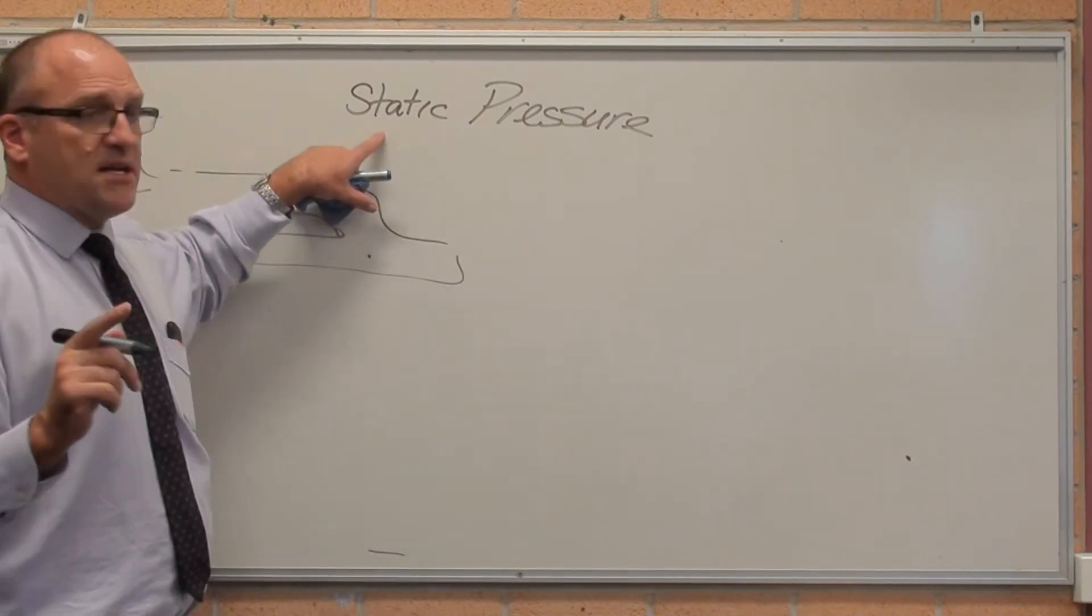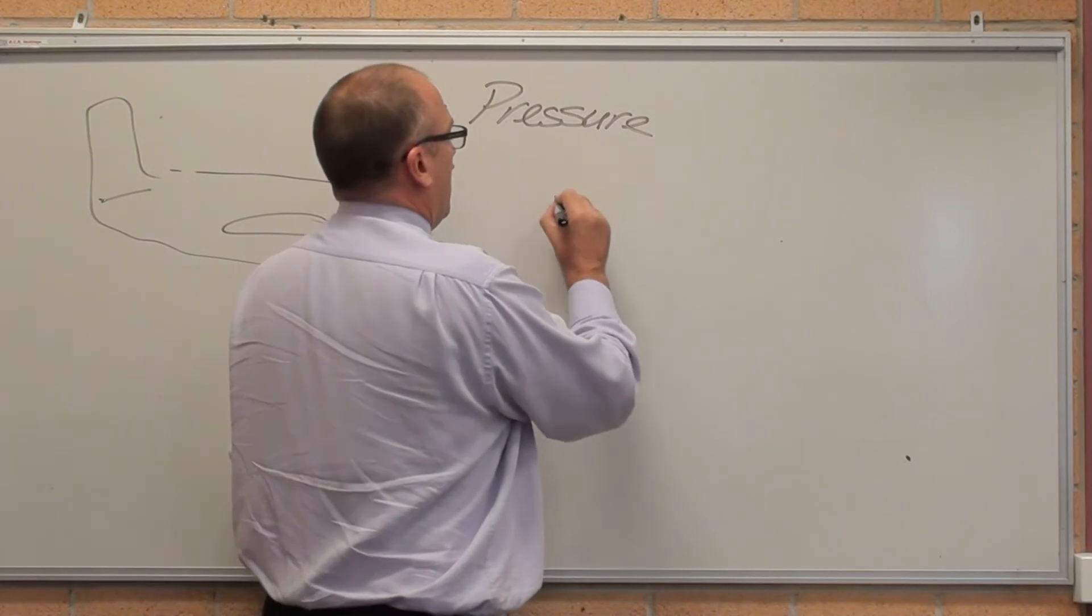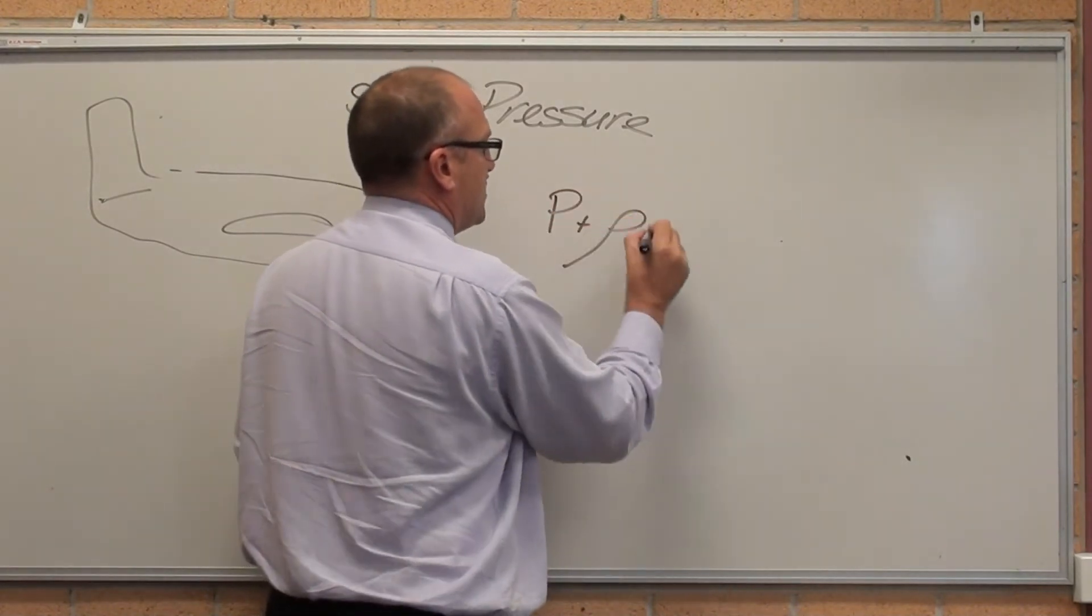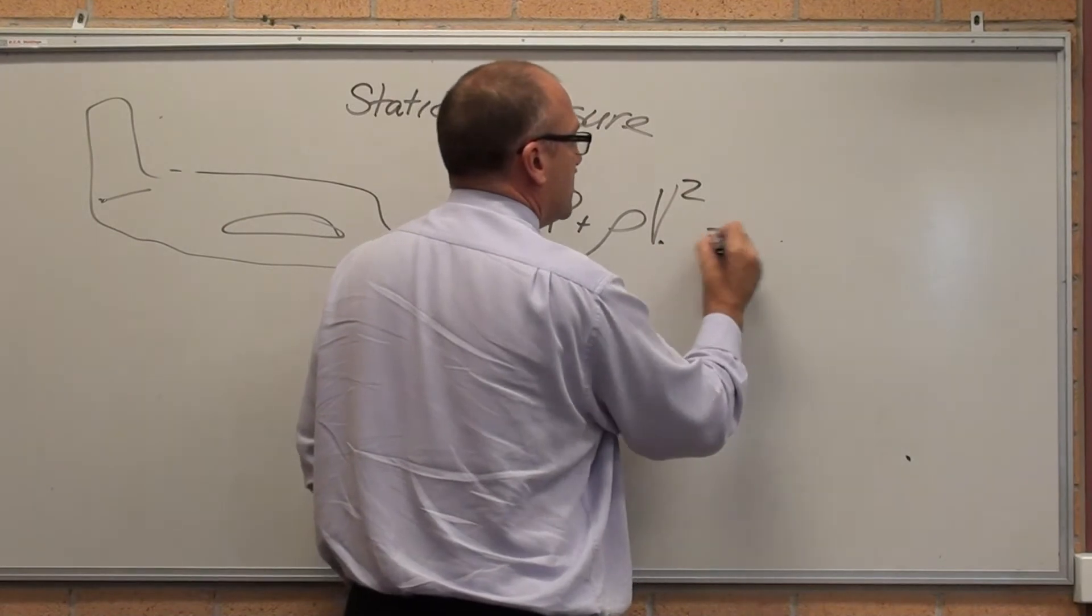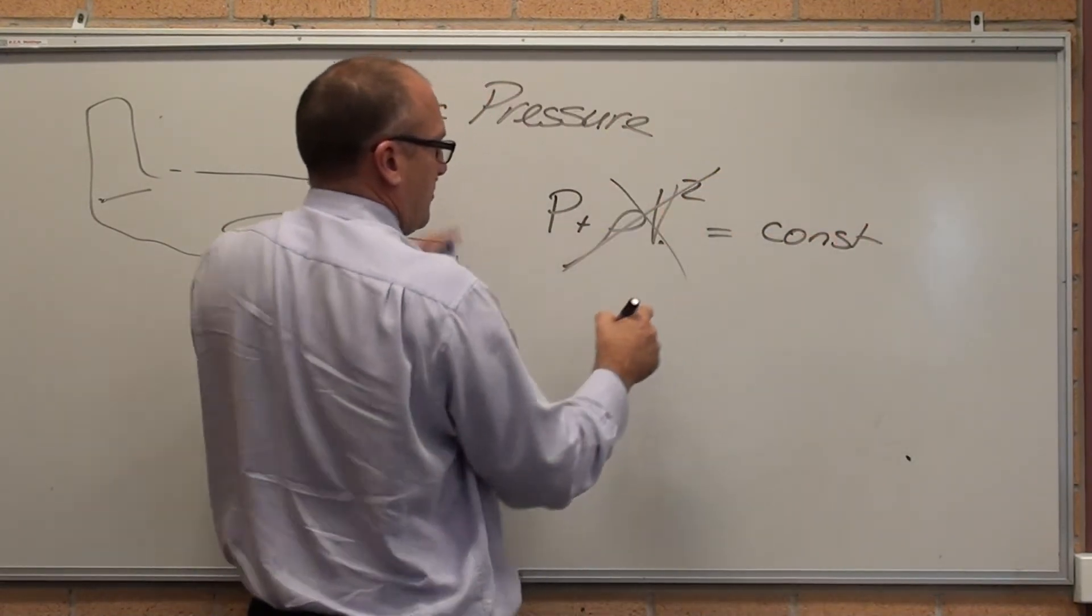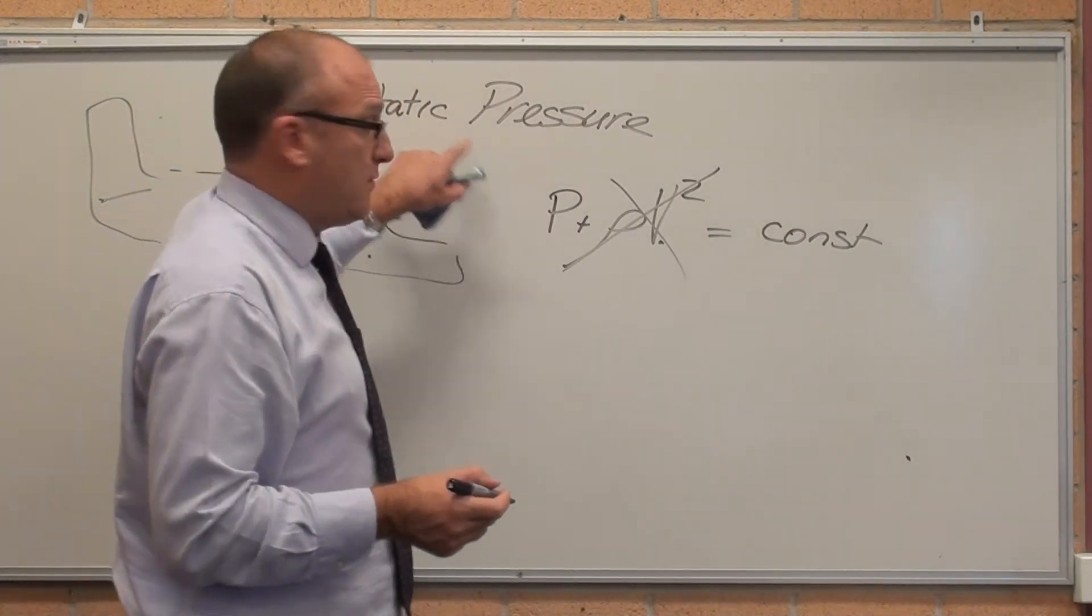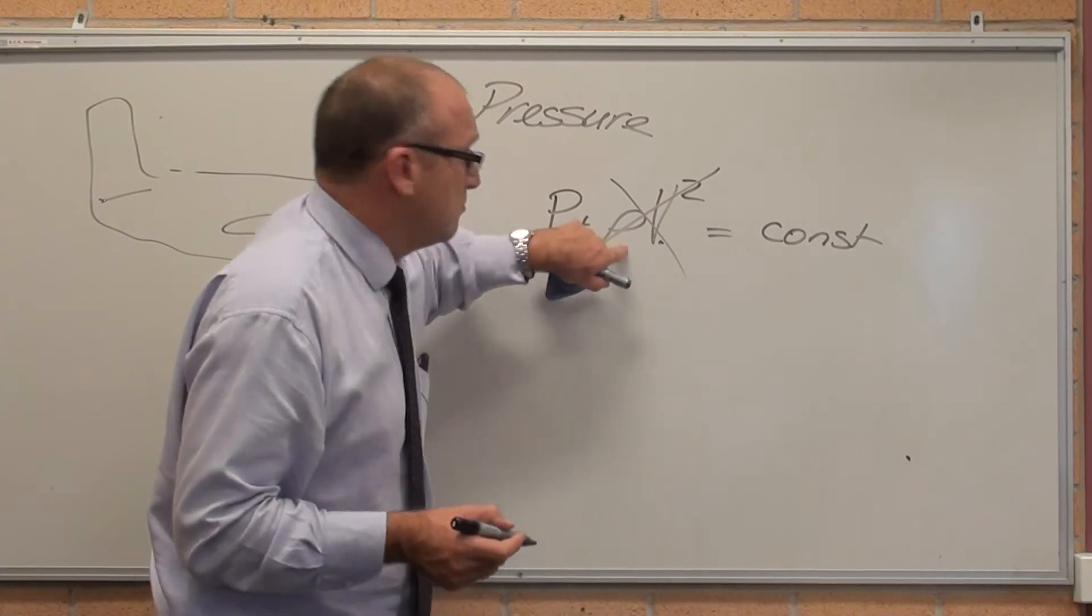The other thing you need to measure velocity, we know that pressure plus density times velocity squared is constant. Static pressure, velocity zero. We know that static pressure plus that is constant.